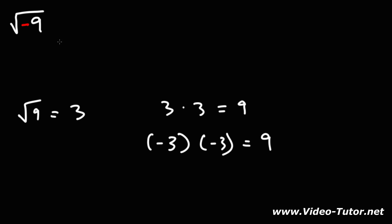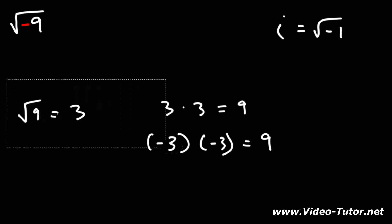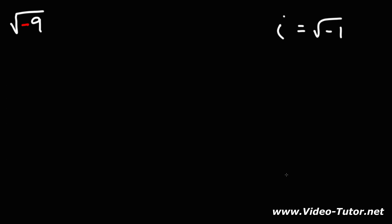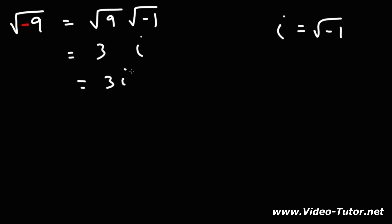Whenever you're taking the square root of a negative number, you need to introduce the idea of imaginary numbers. The imaginary number i is equal to the square root of negative 1, and you need to incorporate this to answer the problem. So the square root of negative 9 can be broken up into the square root of 9 times the square root of negative 1, because 9 times negative 1 is negative 9. The square root of 9 is 3, and the square root of negative 1 is i, so 3 times i is simply 3i.